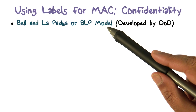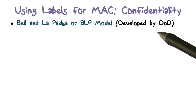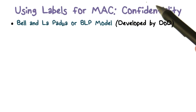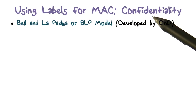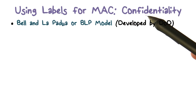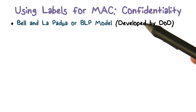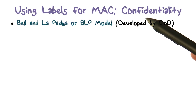The project that developed this model was funded by the Department of Defense. The kinds of labels we're going to talk about are the type we've been discussing — classification, clearance, and things like that. A couple of things to keep in mind: confidentiality is the issue here. We are concerned about disclosure of information, so more sensitive information should not be disclosed to someone who's not cleared at that level.